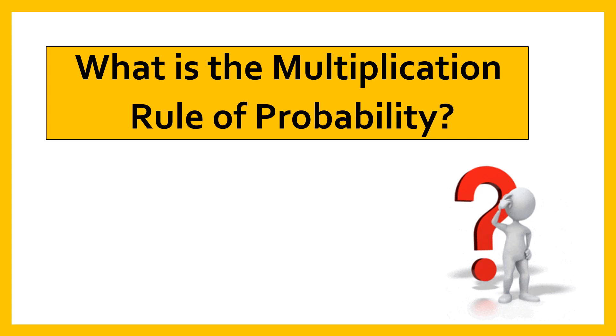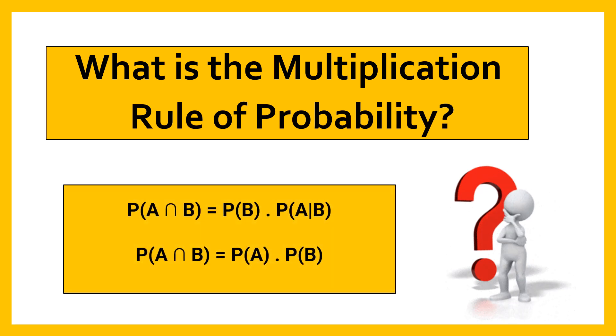What is the multiplication rule for probability? According to the multiplication rule of probability, the probability of occurrence of both the events A and B is equal to the product of the probability of B occurring and the conditional probability that event A occurring given that event B occurs. If A and B are dependent events.